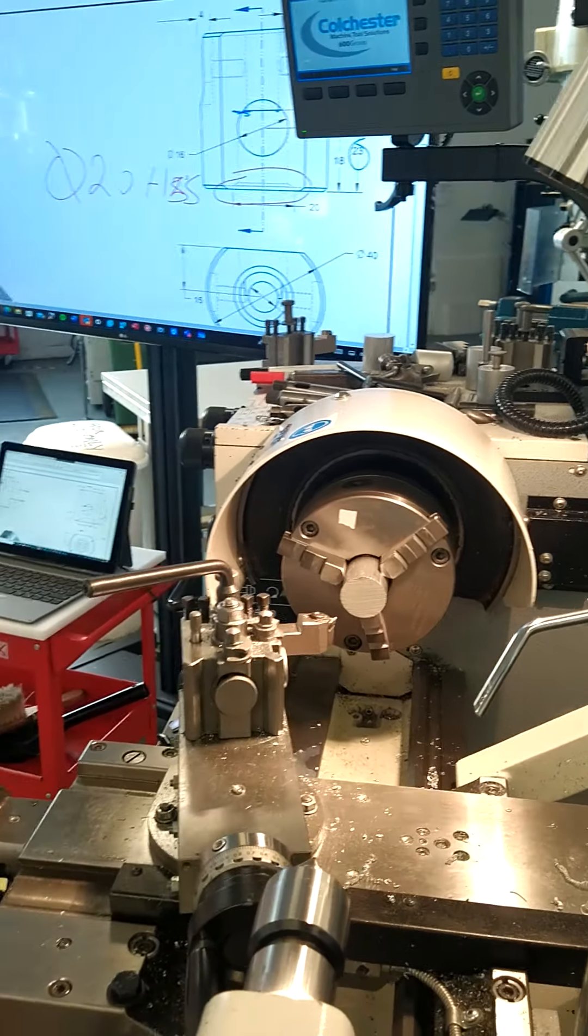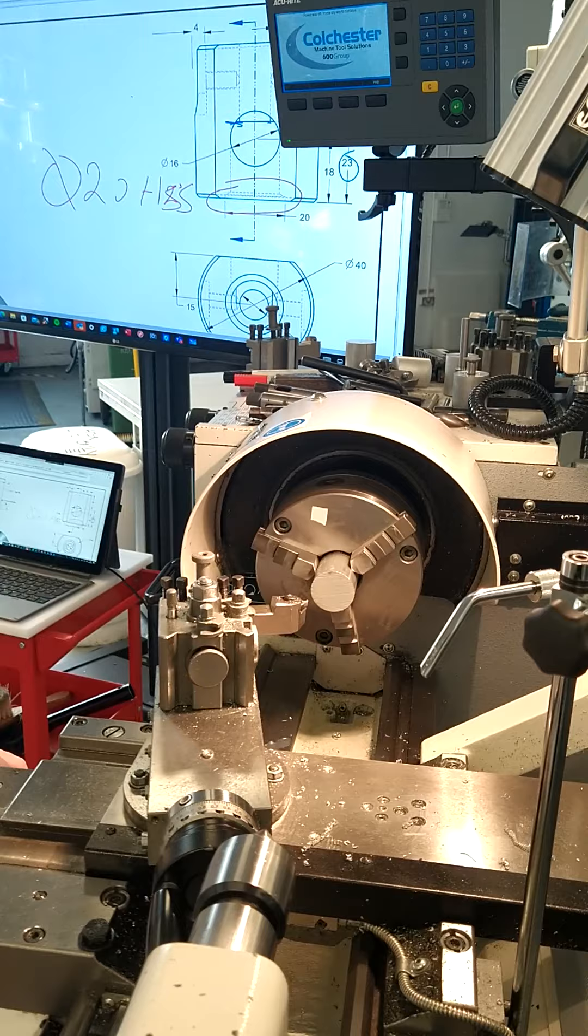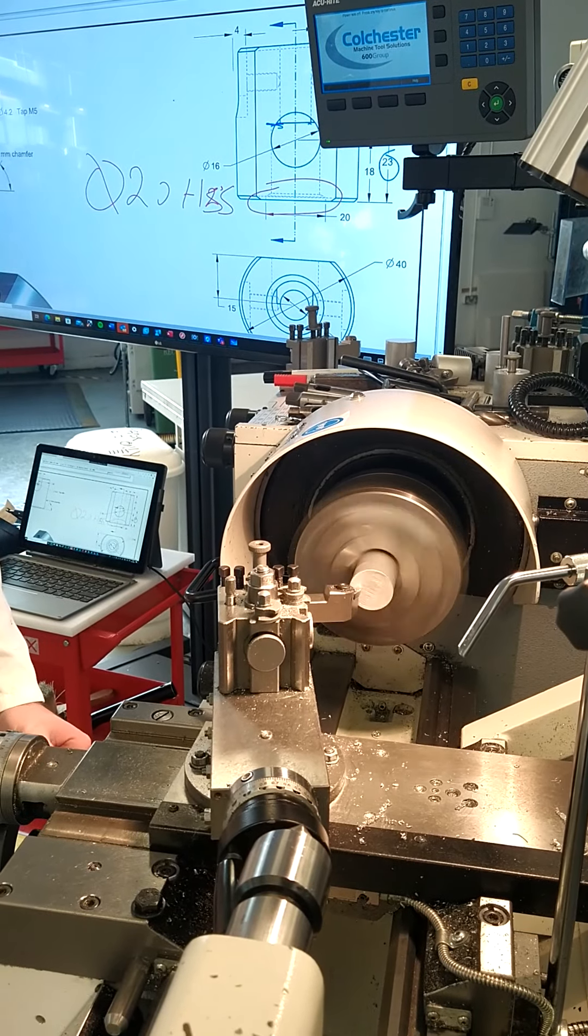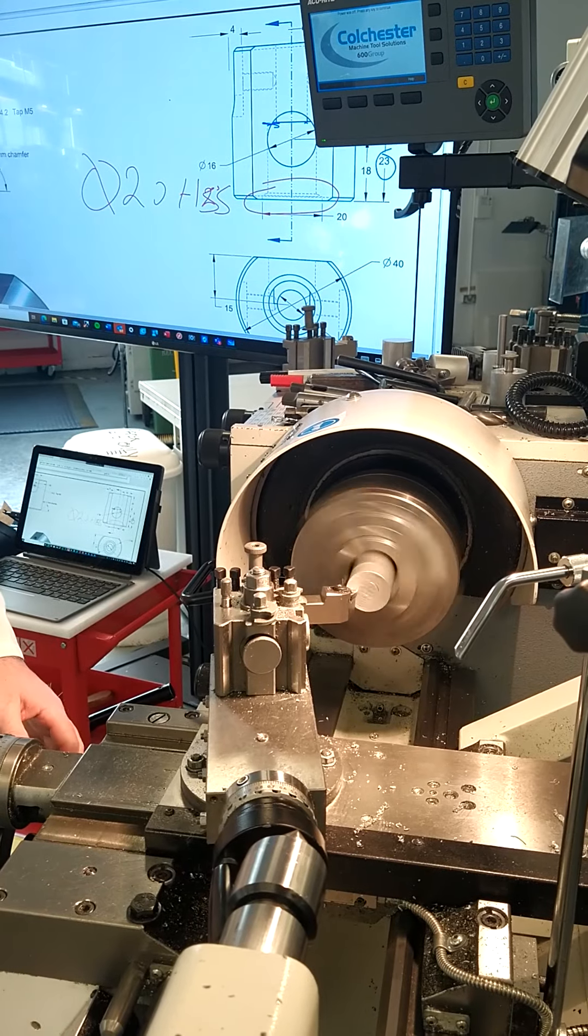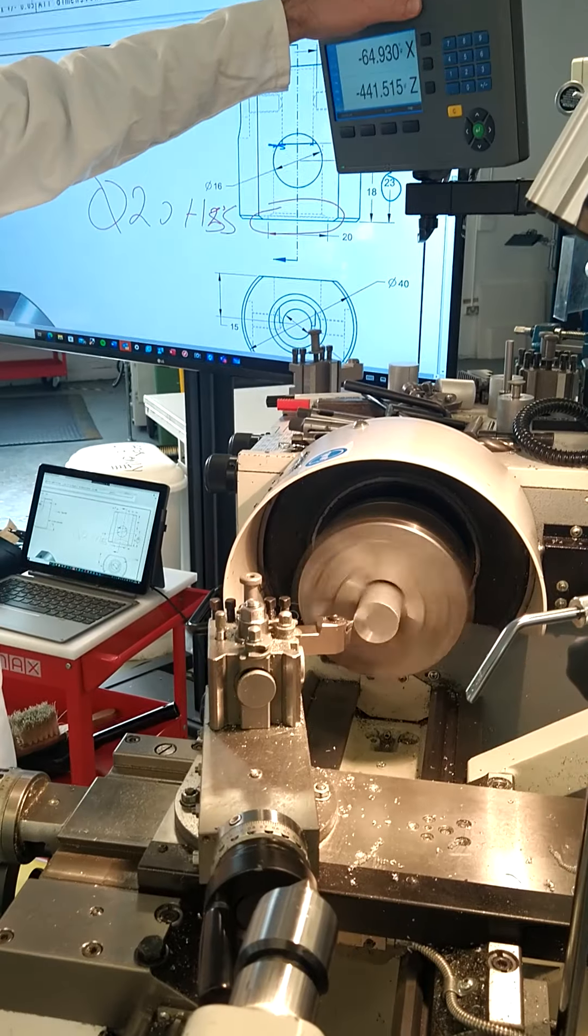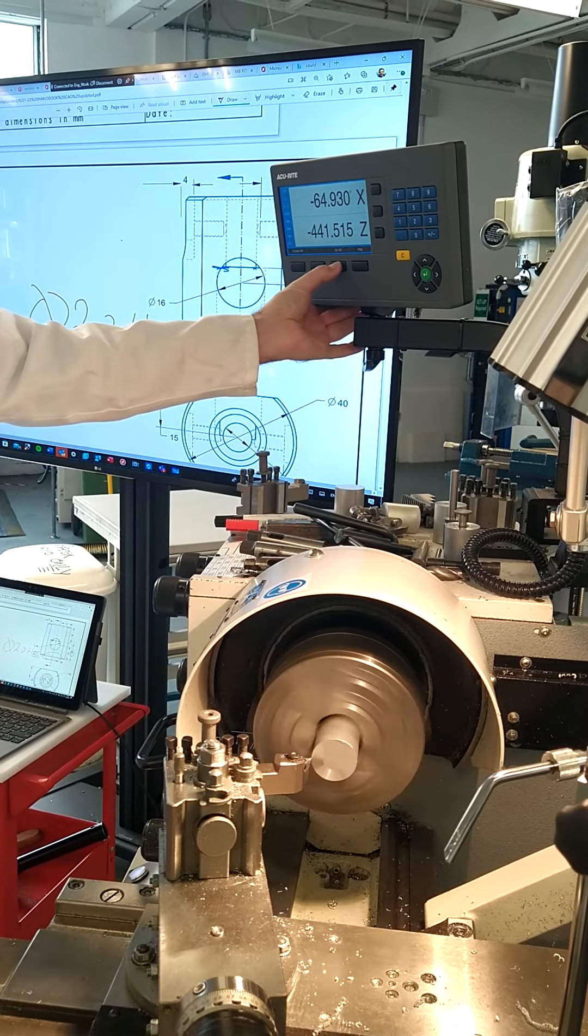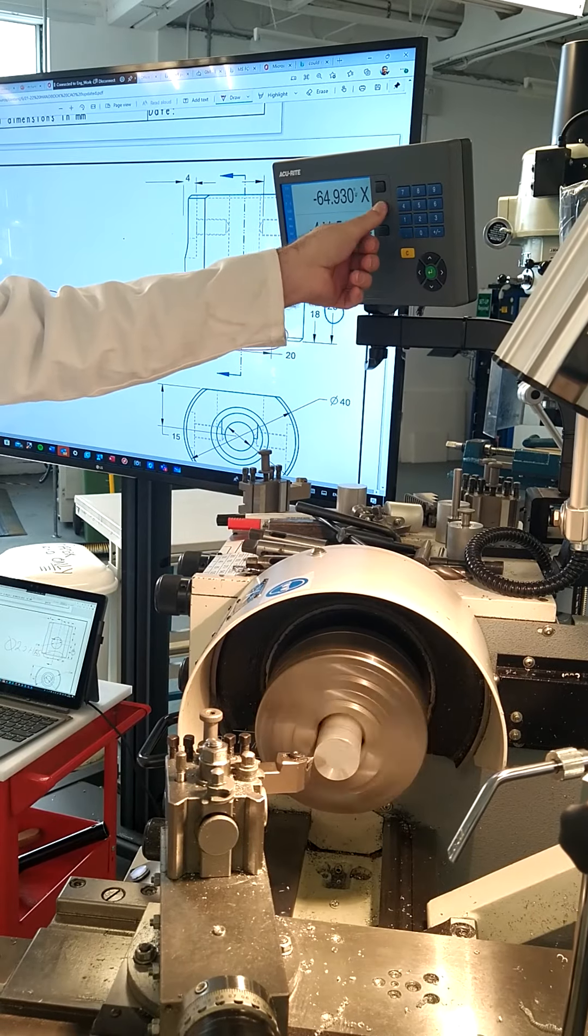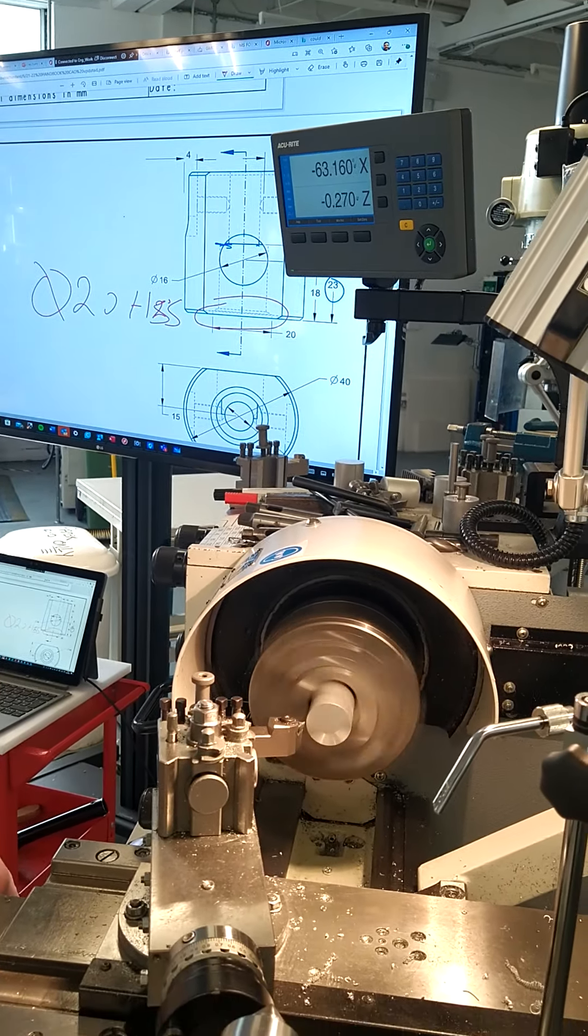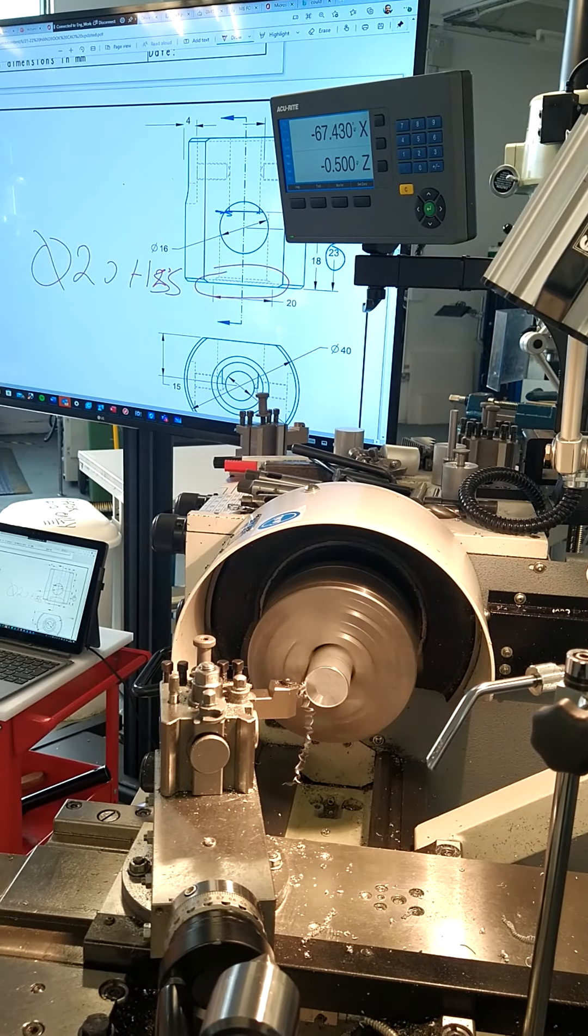So we're going to start with the part. We're going to face across the piece. Touch off. Make a zero on my DRO, press the reference button. Zero is set. So we're making a cut here, half a millimeter. Facing across the piece to remove those saw cuts.